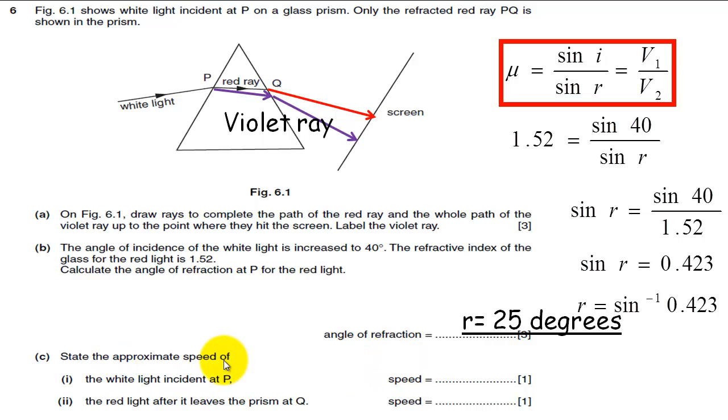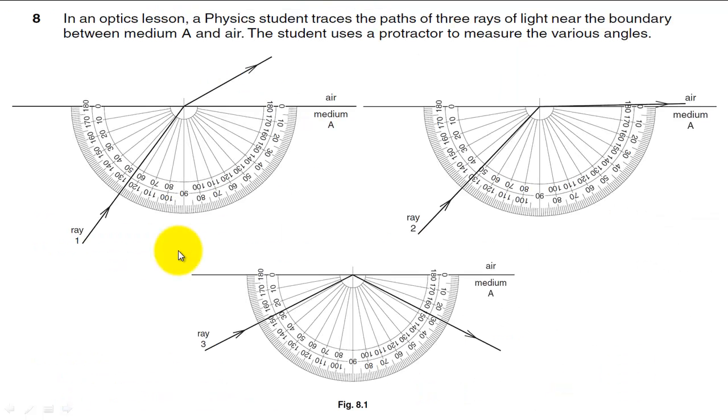State the approximate speed of white light incident at P, or white light in air basically. All electromagnetic waves move at the same speed in a vacuum, which is 3 times 10 to the 8 meters per second. The optical density of air is almost identical to the optical density of a vacuum. So you can just write down for these next two questions 3 times 10 to the 8 meters per second. It doesn't matter what kind of light it is, what kind of electromagnetic wave - gamma rays, X-rays, microwaves, anything. They'll all move at pretty much the same speed in air.